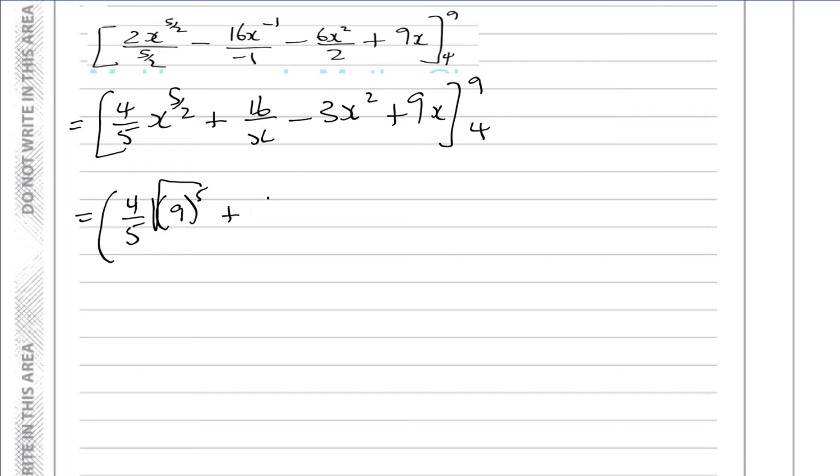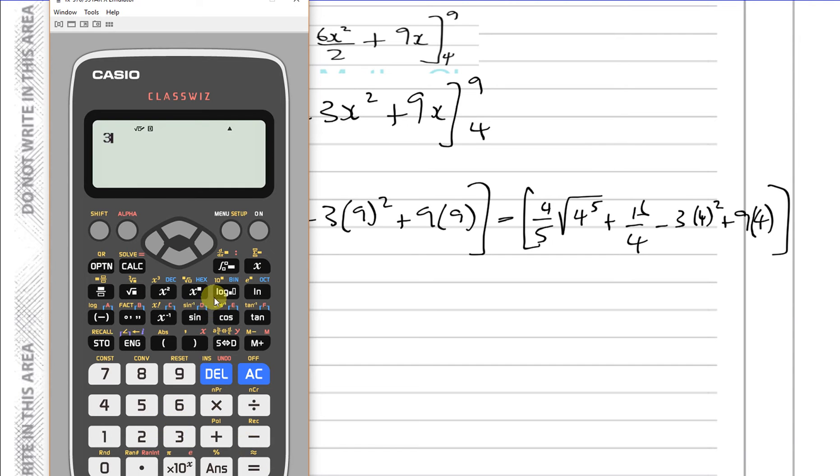So you've got 4 fifths. Now instead of x I'm going to put 9. And this is like the square root of 9 to the power of 5. The square root, the denominator is the root and the numerator is the power. Plus 16 over 9 minus 3 times 9 squared plus 9 times 9 minus and then I'm going to put 4 into this. So I have 4 fifths times the square root of 4 to the power of 5 plus 16 over 4 minus 3 times 4 squared plus 9 times 4.